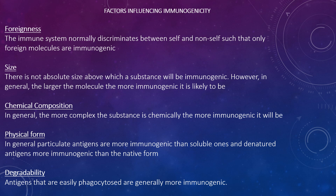With regards to foreignness, the immune system normally discriminates between self and non-self, such that only foreign molecules are immunogenic. Regarding size, there is not an absolute size threshold above which a molecule will be immunogenic; however, in general, the larger the molecule the more immunogenic it is likely to be.